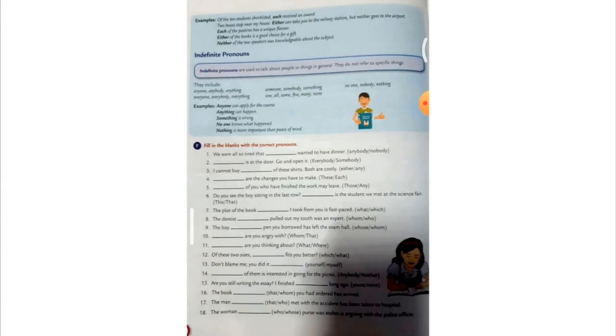I hope this one is the last one. Indefinite pronouns. They have given the example here also. Of the ten students shortlisted, each received an award. This is the example you can refer in your book. Indefinite pronoun means which is not particular in nature. Are usually used to talk about people or things. In general, they do not refer to specific things. Demonstrative pronoun was specific for the object and this one indefinite pronoun is not specific.